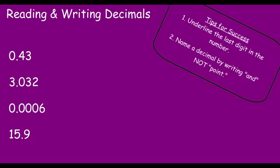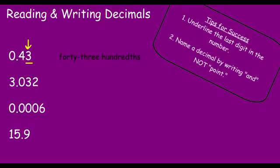When you are reading and writing decimals, you are going to underline the last digit in the number. In this first number, we are going to underline the last digit, which is the 3. The reason you need to know your place value is because you need to know what place that 3 is in. If I sing the song in my head, I have tenths, hundredths. So it is 43 hundredths — notice how I just say the number 43 and the word hundredths, the place value of the last digit, comes next.